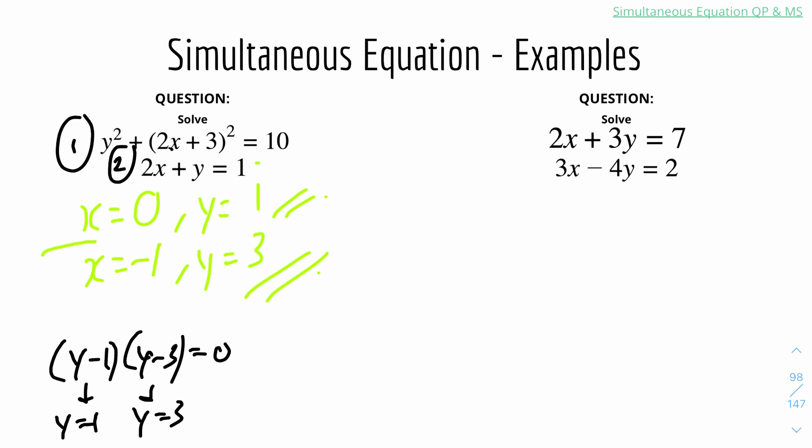Now we have question 2. We have two equations as usual: 2x plus 3y equals 7 and 3x minus 4y equals 2. We'll use elimination for this question. So I could eliminate the x. I have to times the top by 3, which will be 6x plus 9y equals 21.